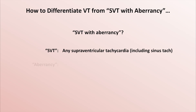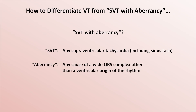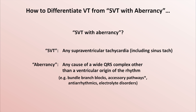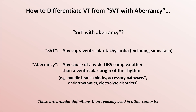Second, in this context, aberrancy refers to any cause of a wide QRS complex other than the ventricular origin of the rhythm. This includes bundle branch blocks, accessory pathways such as that seen in Wolff-Parkinson-White syndrome, effects from antiarrhythmics such as sodium channel blockers, and electrolyte disorders such as severe hyperkalemia. Although it should be noted that differentiating VT from a regular SVT in the presence of an accessory pathway is often not possible in the absence of a baseline EKG. Both of these definitions for SVT and aberrancy are broader than are typically used in other contexts.